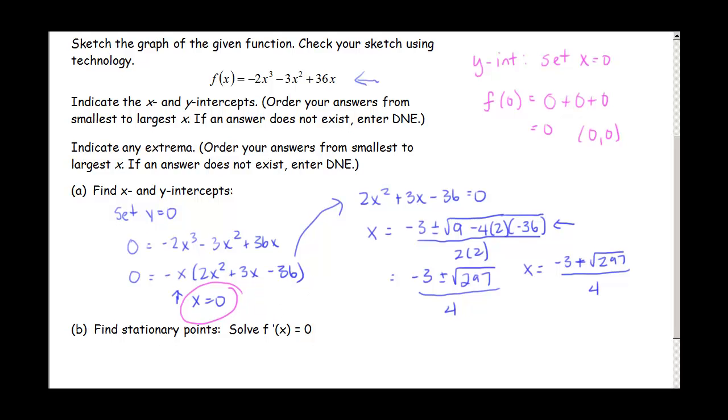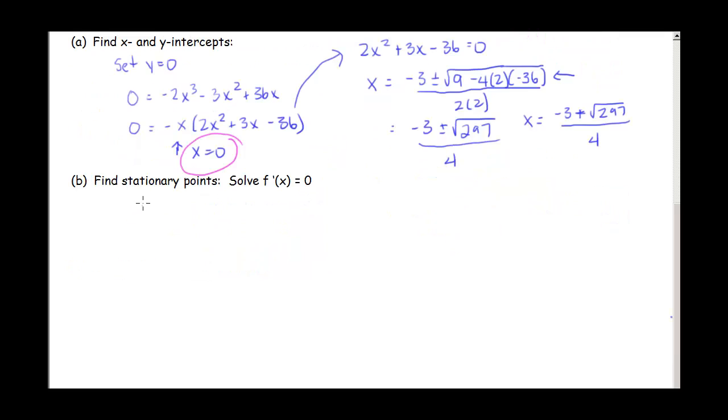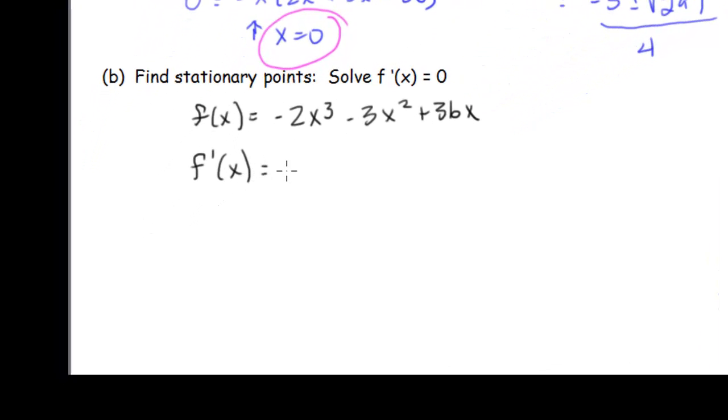Next what we need to do is we need to find those stationary points. So remember our f(x) is negative 2x cubed minus 3x squared plus 36x. If we're trying to find stationary points, what we need to do is find the derivative. So our derivative is going to be negative 6x squared minus 6x plus 36. And we're setting that equal to 0. Now notice that each of my terms has a factor of 6. And also the coefficient of my x squared term is negative. I always like that to be positive if possible. So I'm going to divide everything by negative 6.